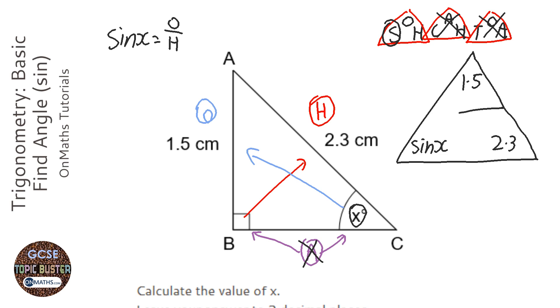Now, this is saying that sin x is equal to 1.5 over 2.3. OK, so this is a bit more complicated now. Because we want x and not sin x, so we've basically got sin x equals 1.5 over 2.3.